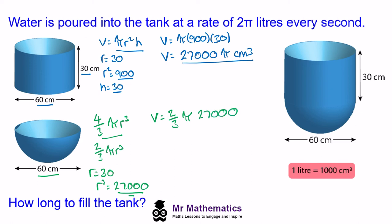We can work out one third by dividing this by three so the volume is two lots of 9,000, which is 18,000π cm³. So the volume of the tank will add these two together, the cylinder and hemisphere, and this gives us a total volume of 45,000π cm³.